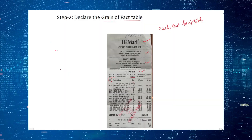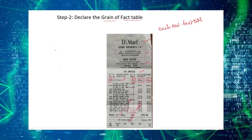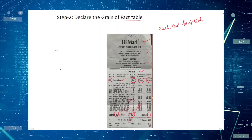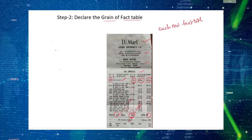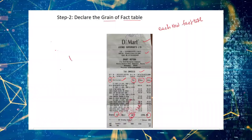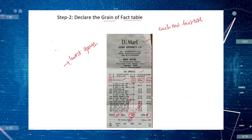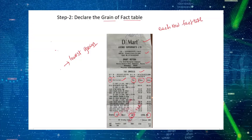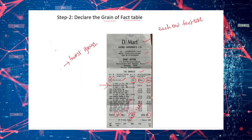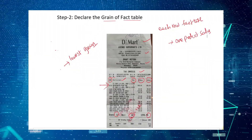The invoice also includes product ID, product name, quantities, net rate, total value, and a list of products. At the total level, we get the total number of items, total quantities, total price, and any discounted price. The simple trick is to select the lowest grain so we don't lose any data and can answer any business questions. In this invoice, the lowest grain is the product level — each row in the fact table will represent one product sale.